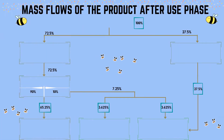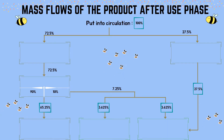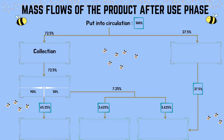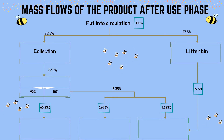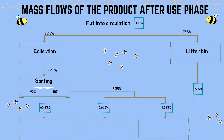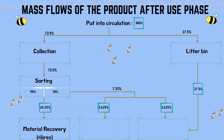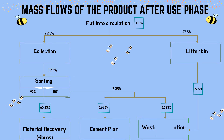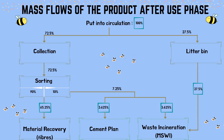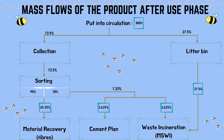Mass flows of the product after the use phase: when put into circulation, this represents 100%, which is divided into two sections — 72.5% for collection and 27.5% for the litter bin. From collection, 72.5% splits into 90% and 10% among sorting. From that, 65.25% goes to material recovery (fibers) and 3.625% each to cement plant and waste incineration (MSWI). The litter bin portion also contributes 27.5% to waste incineration (MSWI).